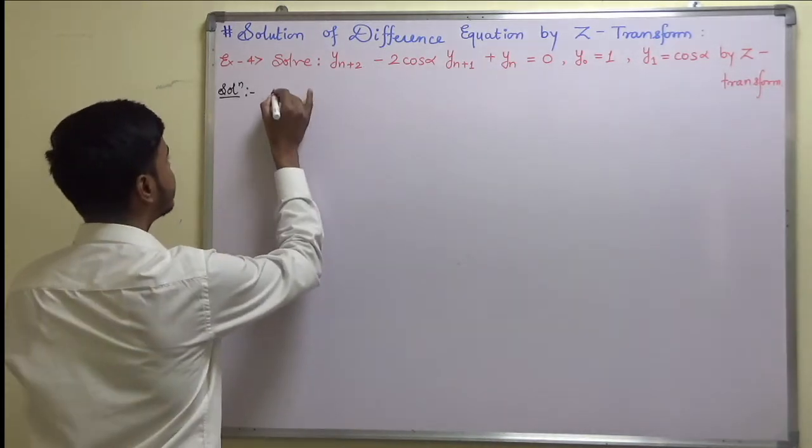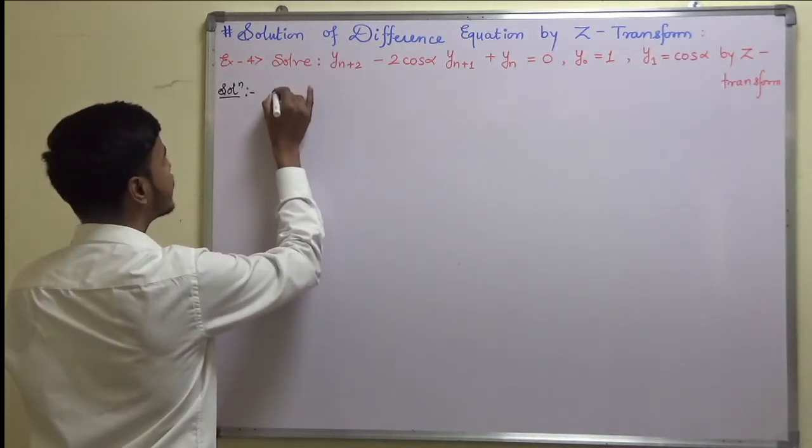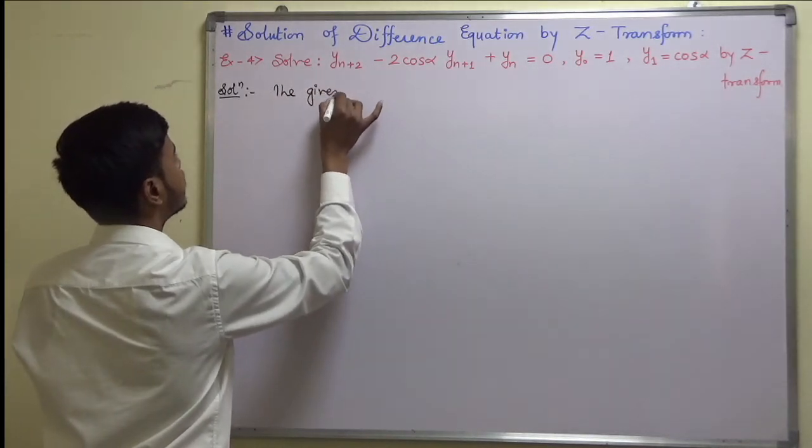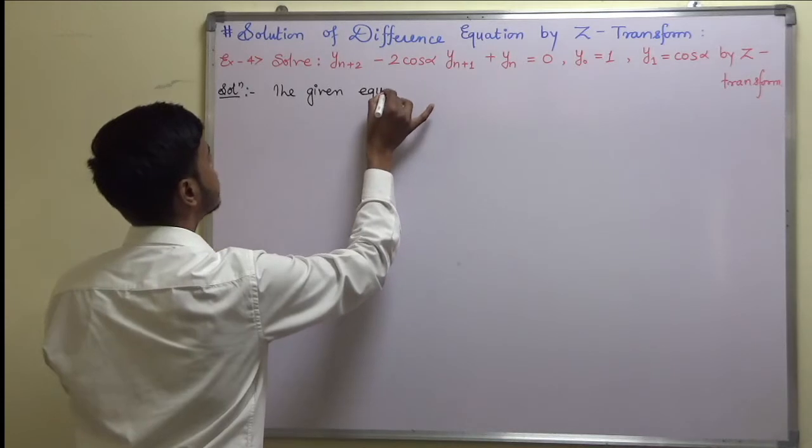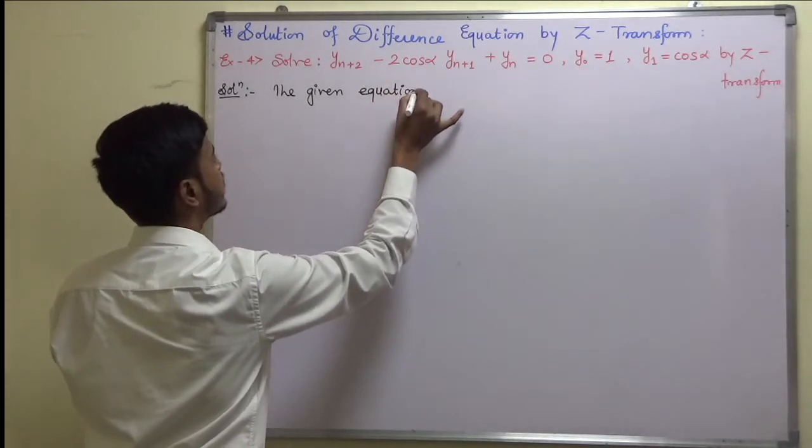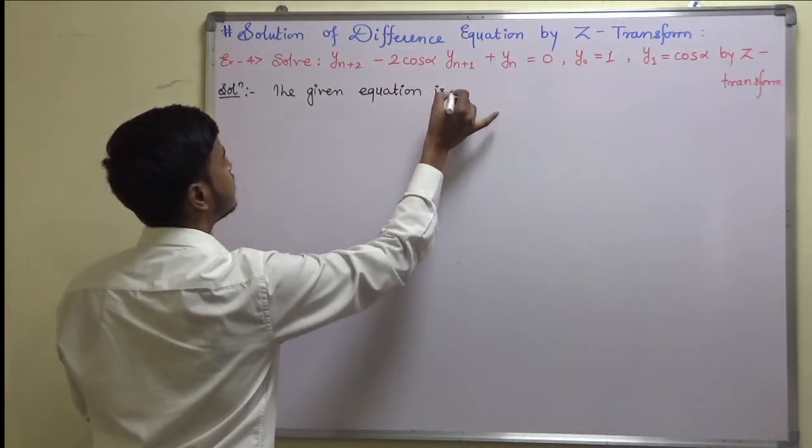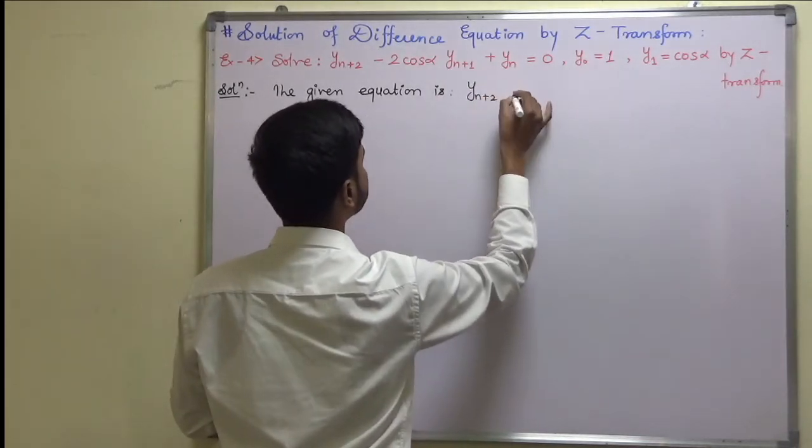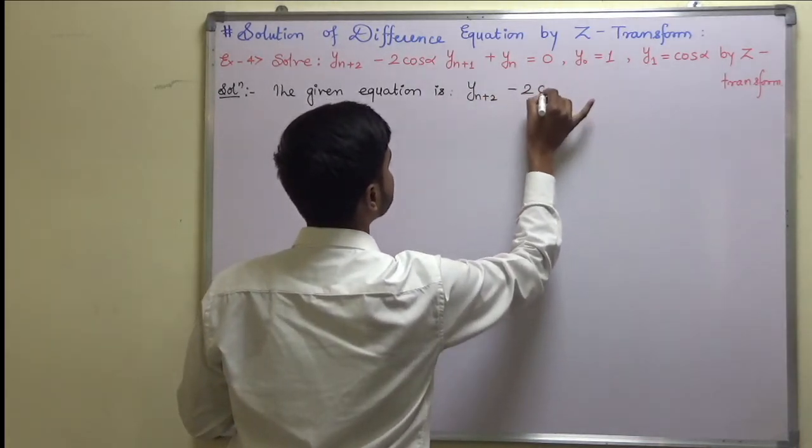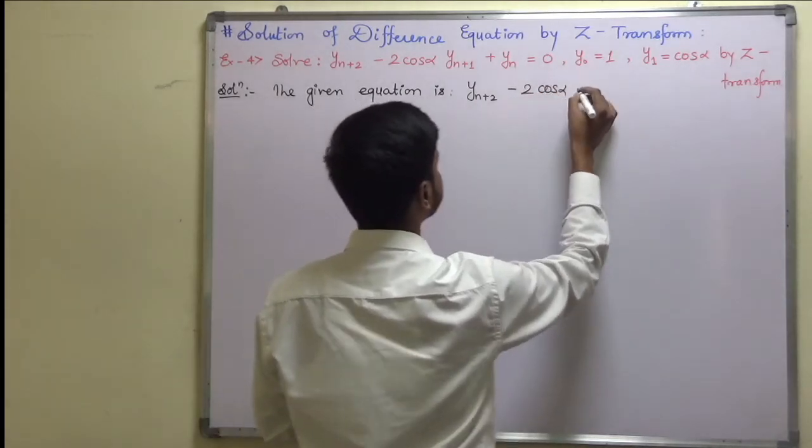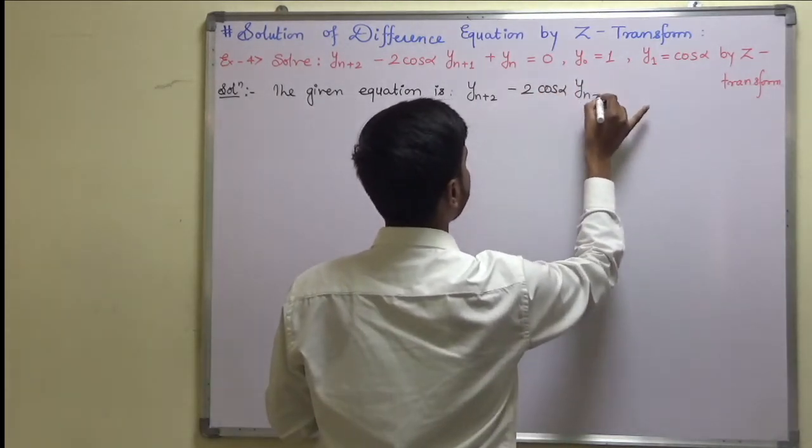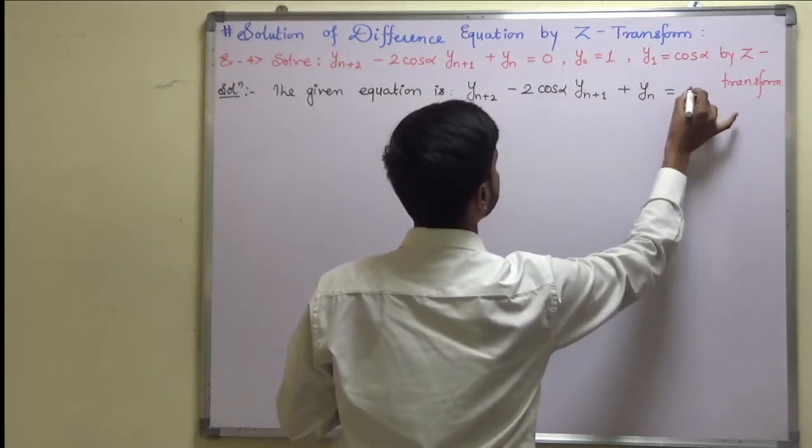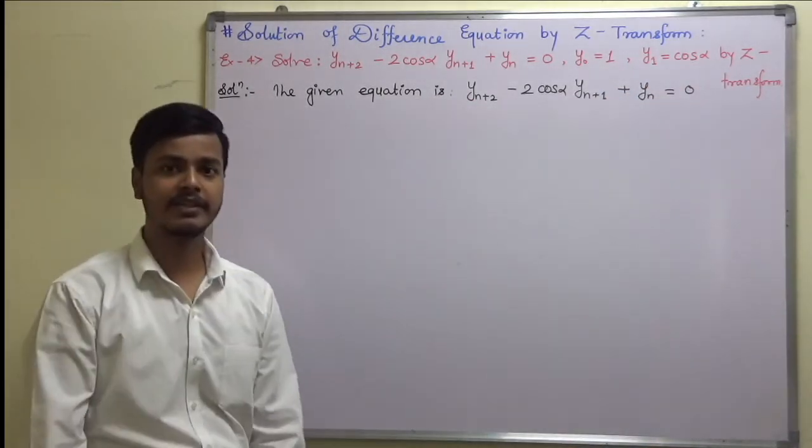How are we going to start? We're going to start with the given equation. The given equation is y(n+2) - 2cos(alpha)y(n+1) + y(n) = 0. We have written the given equation.